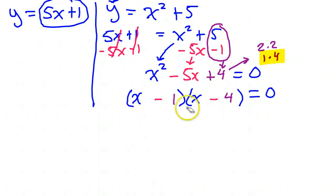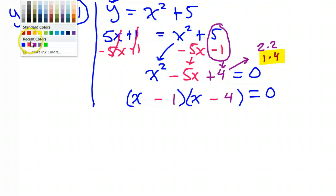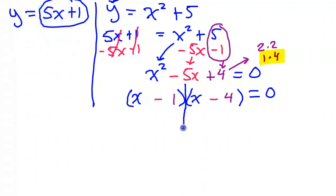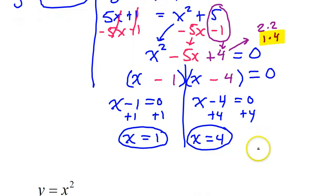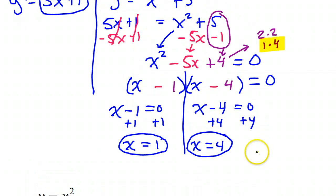Now we can set these two factors equal to 0 in order to solve. So I'm just going to set x minus 1 equals 0 and x minus 4 equal to 0. So if I add 1 to both sides, that will give me x equals 1. And if I add 4 to both sides, that will give me x equals 4. So these are the x values that we need.